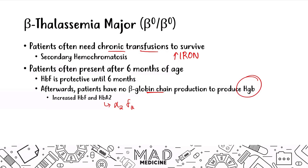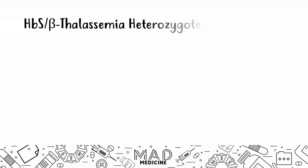Another type of beta thalassemia occurs with a concurrent disease. What other very common disease occurs in the beta chain? It's called hemoglobin S, also known as sickle cell disease. Hemoglobin S and beta thalassemia heterozygote is something you should know. Sickle cell anemia occurs due to a point mutation on the beta globin chain of hemoglobin — the same thing that's happening with beta thalassemia. Both are point mutations on chromosome 11. You can have one gene leading to hemoglobin S and another gene leading to beta thalassemia.